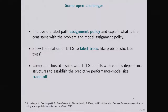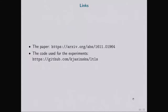Some open challenges: in this kind of model, the way we assign labels to paths is a very important issue. We apply a simple heuristic making use of the fact that we can produce a ranking efficiently, but it can be improved. Other challenges include showing the relationship between LITTLES and label trees, checking results with various underlying structures, and establishing the trade-off between predictive performance and model size.